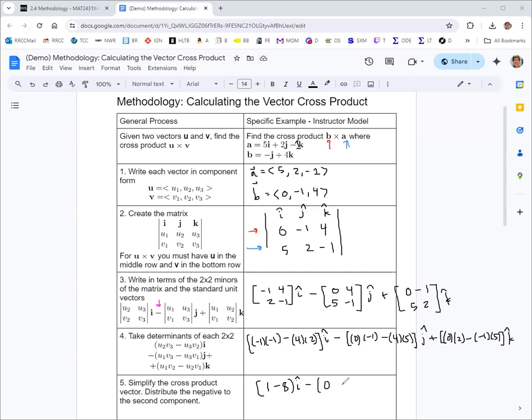Step five is simplifying this result. Negative one times negative one is one, four times two is eight, so one minus eight is negative seven. Zero times negative one is zero minus twenty is negative twenty. Zero times two is zero minus a negative five is plus five. So we get negative seven i plus twenty j plus five k, and that's the cross product b cross a.